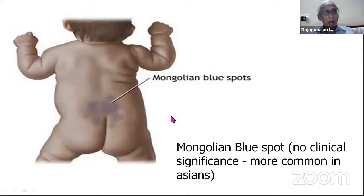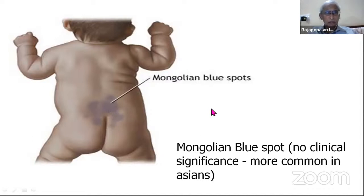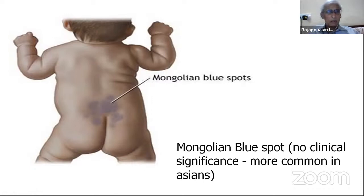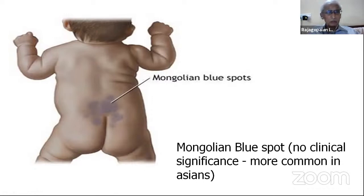Not all hyperpigmentation is abnormal. The blue spot called a Mongolian blue spot — officially Mongolian superspot — is harmless and seen not only in Mongolians but also commonly in Indians. It is an innocuous, harmless finding. Now coming to palpation.